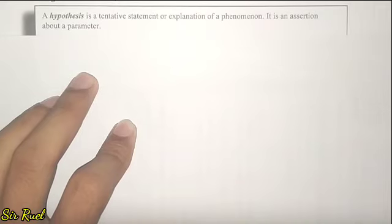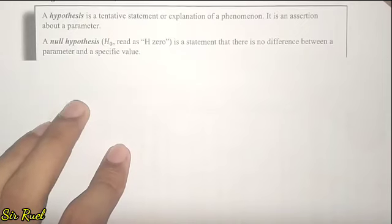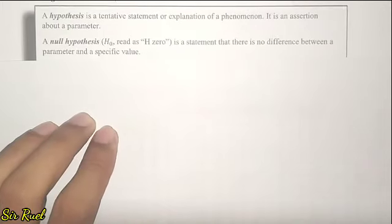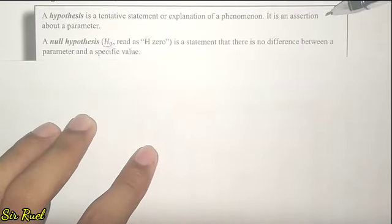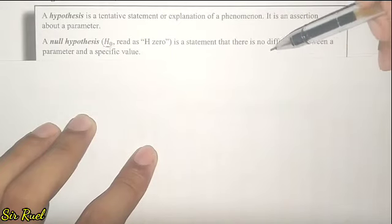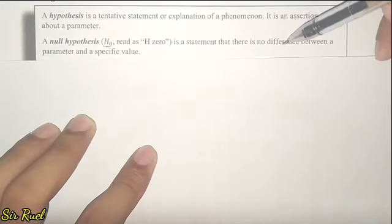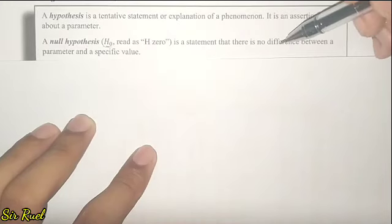We have two types of hypothesis: the null hypothesis and the alternative hypothesis. The null hypothesis, symbolized as H0, is a statement that there is no difference between a parameter and a specific value — meaning there is no difference, no change, or no relationship between two parameters or between a parameter and a specific value.